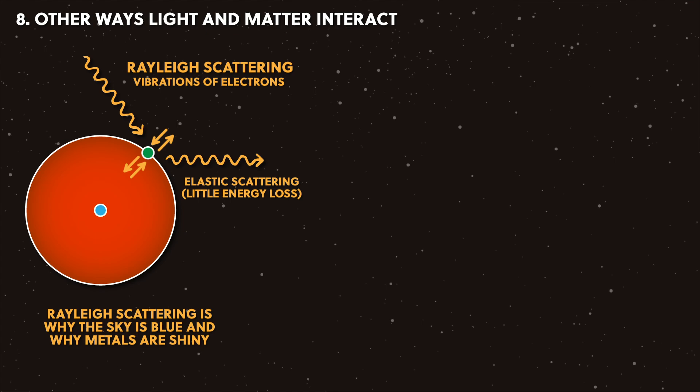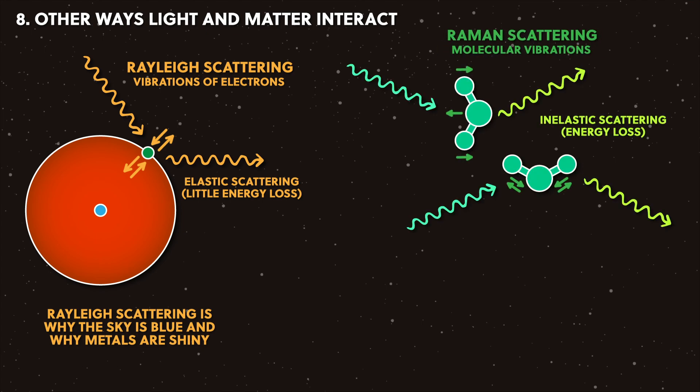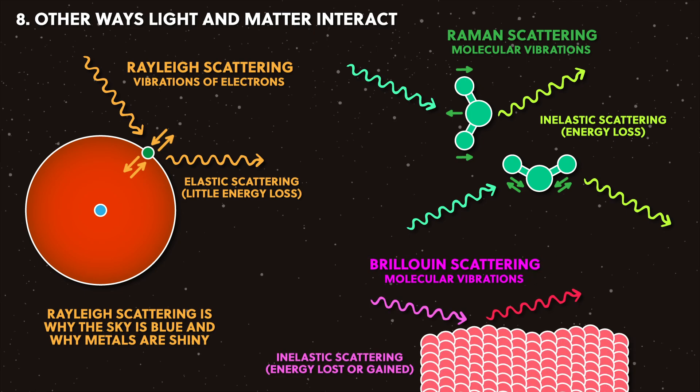We've also got Raman scattering, where light shines on molecules and can vibrate the molecules in different modes, and it's got its own spectroscopy called Raman spectroscopy. And there's also Brillouin scattering, where light can lose or gain energy when interacting with vibrational waves in the atomic lattices of solids.